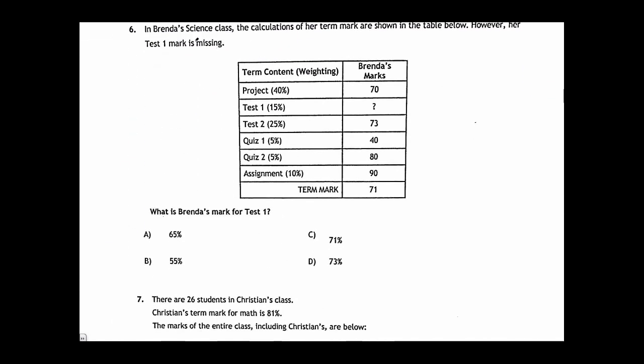Question 6: In Brenda's science class, the calculation of her term marks are shown in the table below. However, her test 1 mark is missing. What is Brenda's mark for test 1? Here we're going to work backwards from the average to find the missing value. But we're also going to have to take into consideration the weighing of each grade. Here's how this works. We multiply the mark by its weighing, and we add up all those marks multiplied to their weighings, and it must come out to 71%.